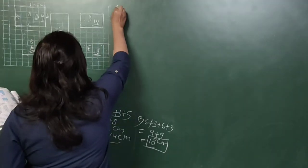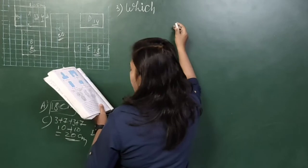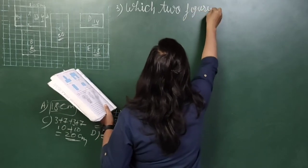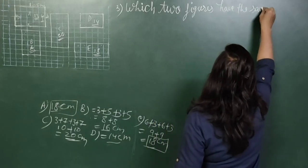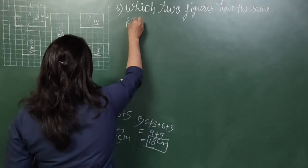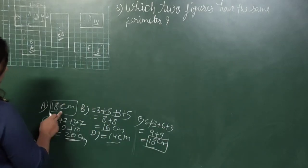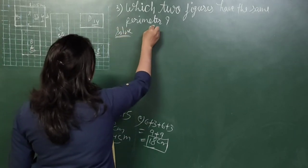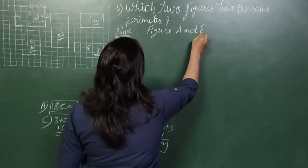Now question number 3: Which 2 figures have the same perimeter? We compare all the perimeters we found. Figure A and figure E both have the same perimeter of 18 centimetres. Write in your workbook: figure A and E have the same perimeter.